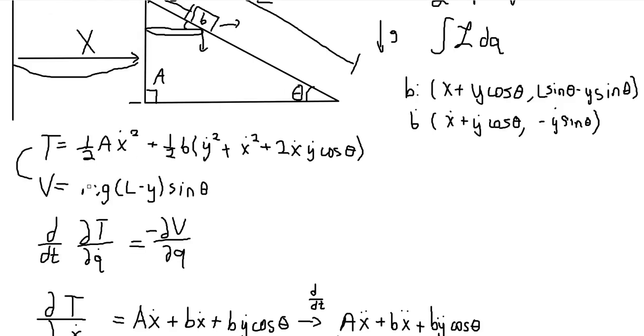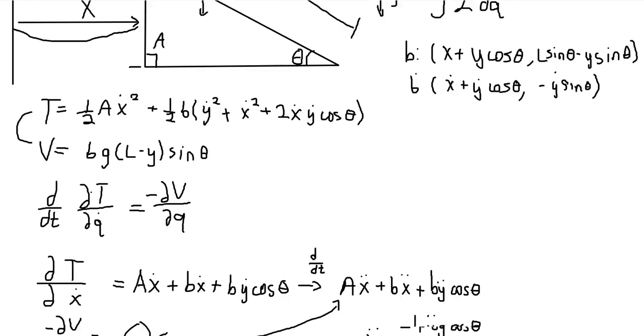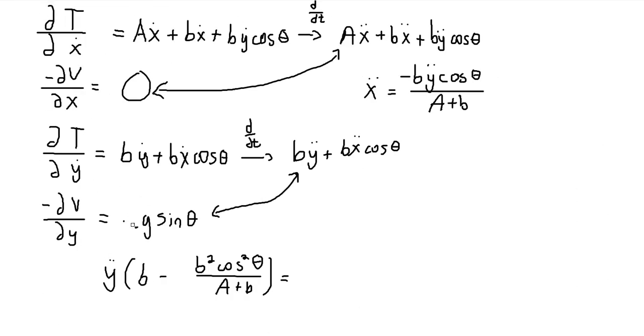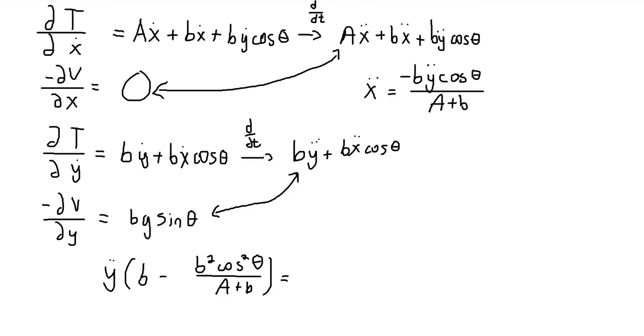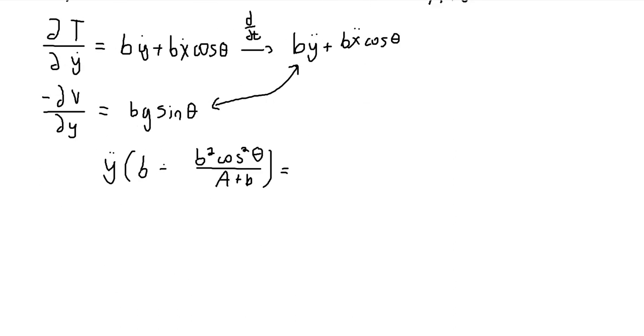And one thing here, everywhere I put a little M, like for the potentials, that's supposed to be a lowercase B. So anyway, here I factored out Y double dot, and we have times B minus B squared cosine squared theta over A plus B. This is equal to B G sine theta.